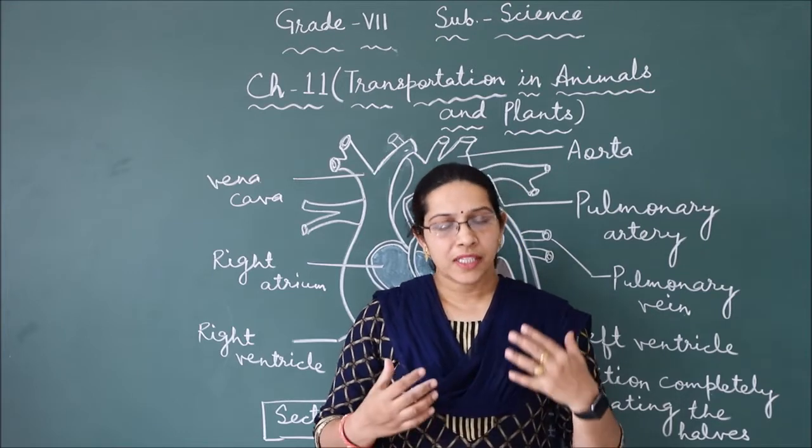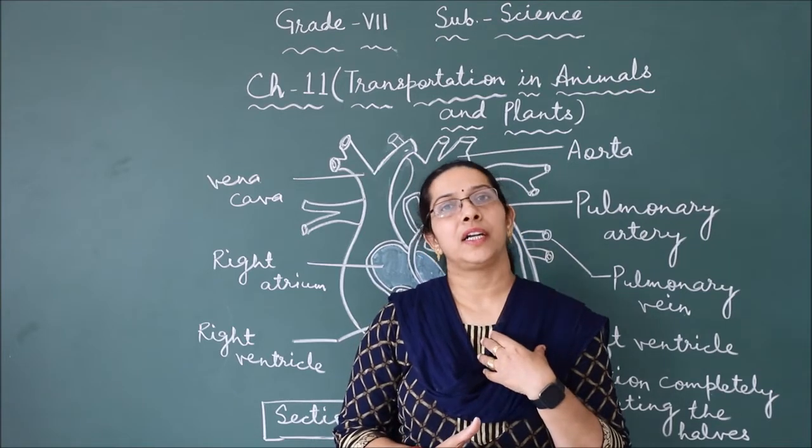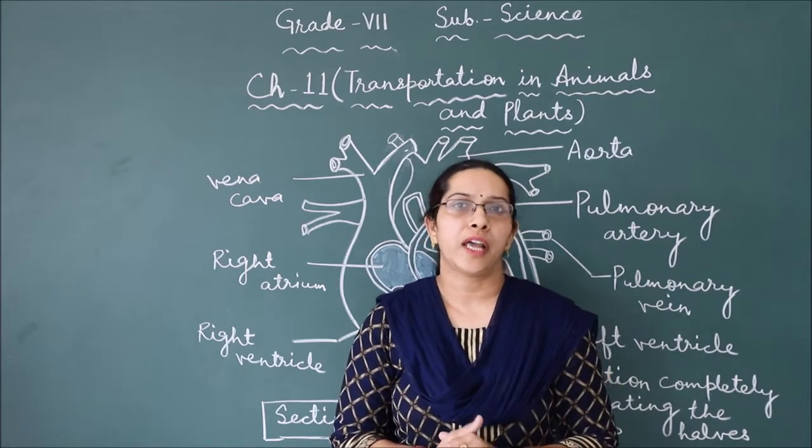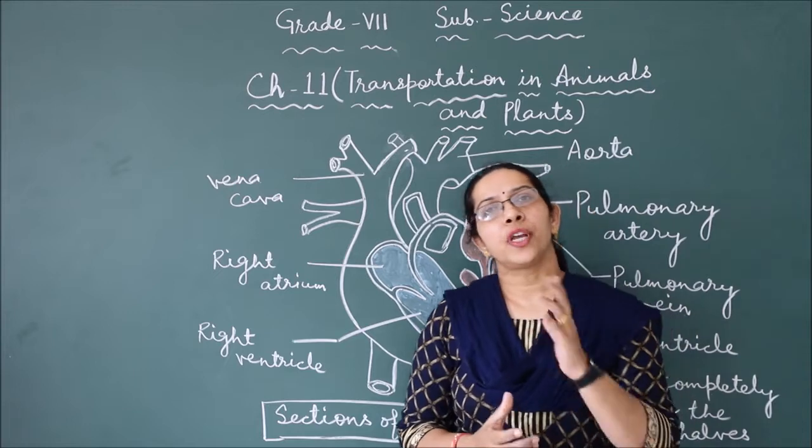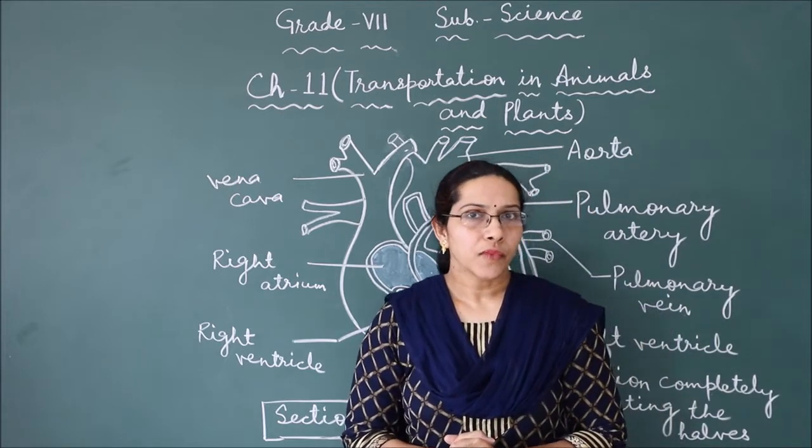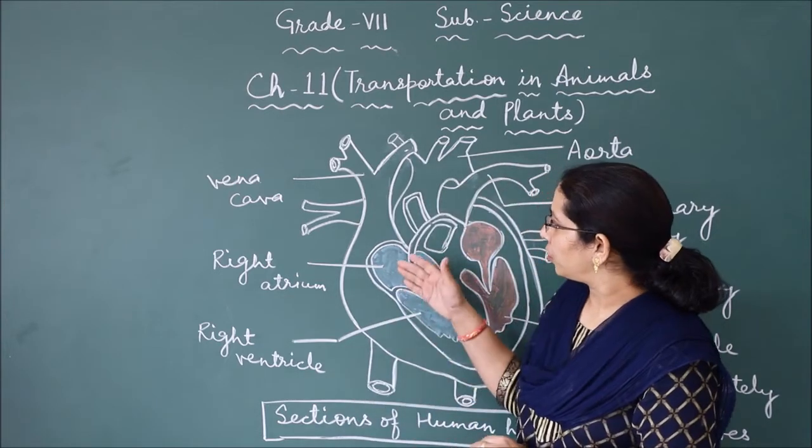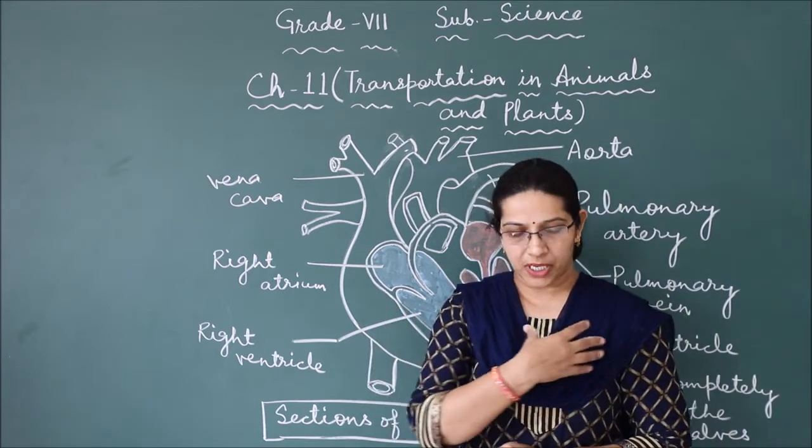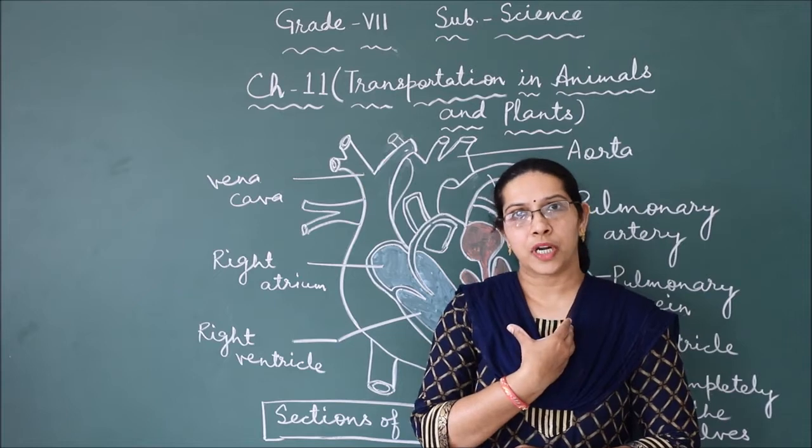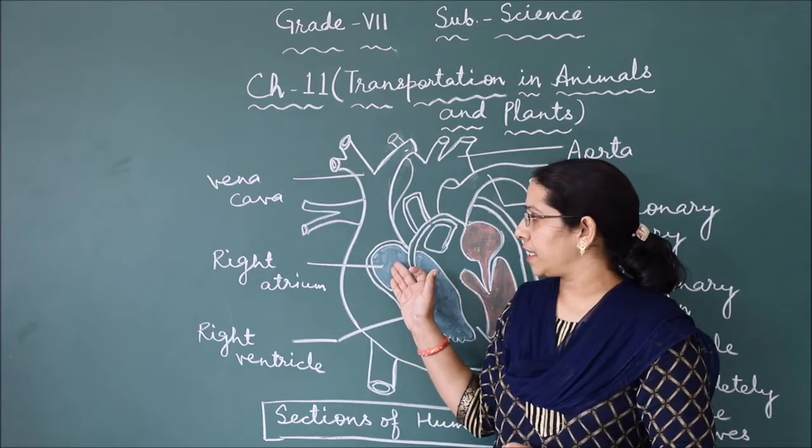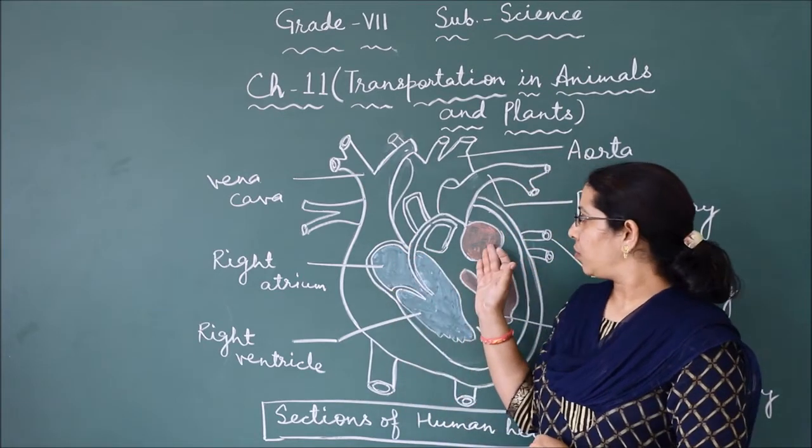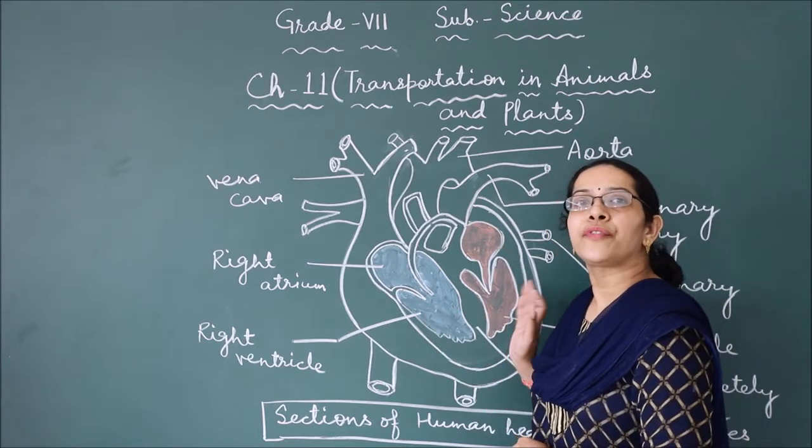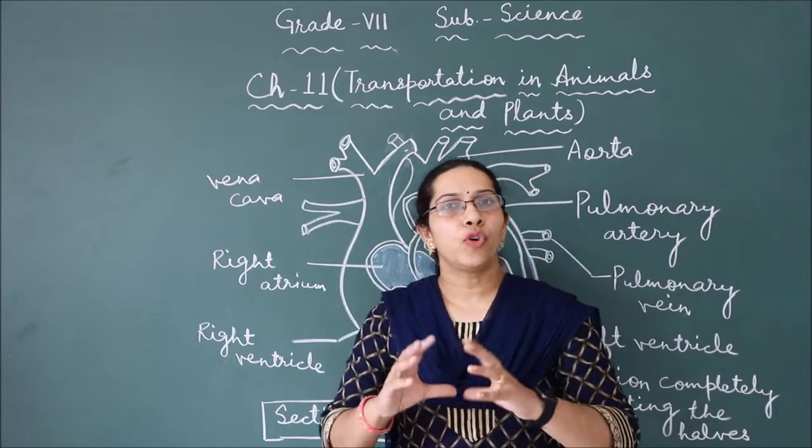If I am standing in this position, my heart is here, and the lower tip is tilted towards the left. The heart is divided into four chambers. The two upper chambers are called atria. If I am here and my heart is here, this is the right atrium, this is the left atrium, this is the right ventricle, and this is the left ventricle. These are the four chambers.